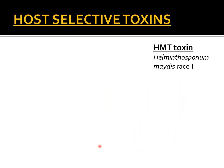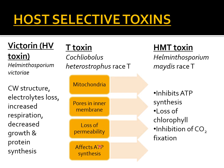The next toxin is HMT toxin, again produced by race T of Helminthosporium maydis, which causes leaf blight of corn. This toxin leads to loss of matrix density in the mitochondria, which inhibits ATP synthesis. There is also loss of chlorophyll and inhibition of carbon dioxide fixation — the dark reaction of photosynthesis. So HMT toxin inhibits ATP synthesis, causes loss of chlorophyll, and inhibits the dark reaction of photosynthesis.